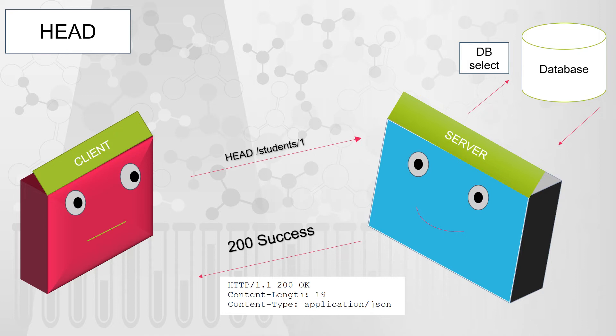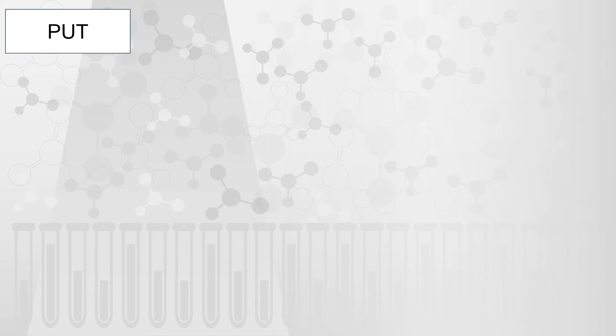For bigger payloads, HEAD will save a lot of bandwidth and make your overall application faster. HEAD is idempotent and, as there are no changes on the server side, it is also safe.